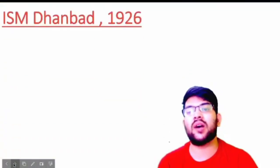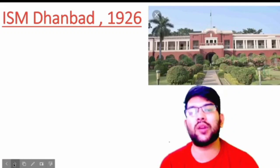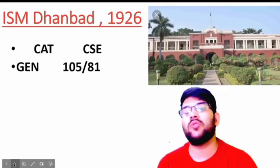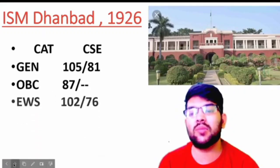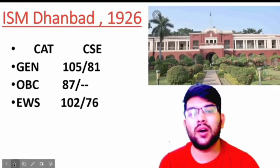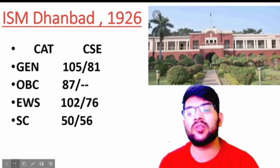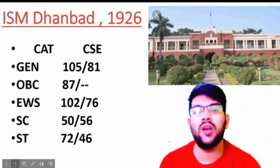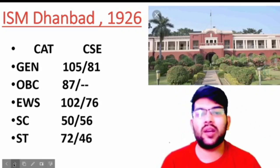The next one is ISM Dhanbad, established in 1926. Here is the information: General 105 and 81 marks, OBC 87 marks, EWS 102 and 76 marks, SC 50 and 56 marks, and for ST it is 72 and 46 marks.